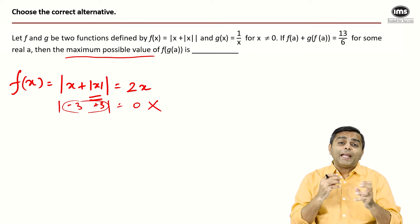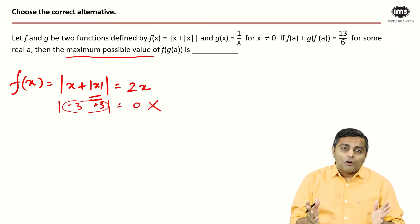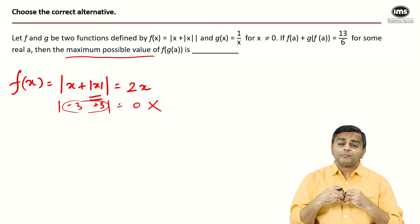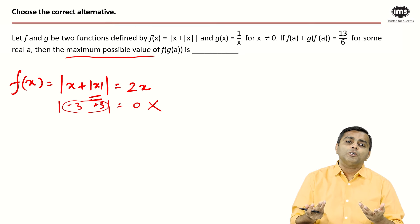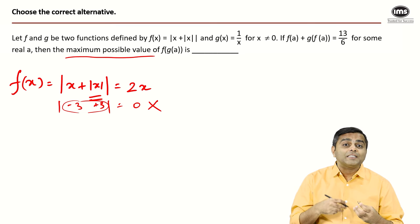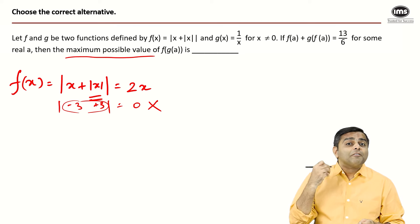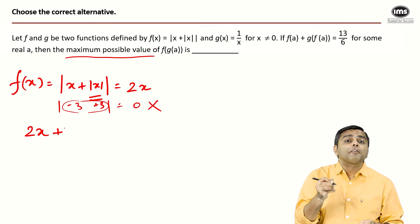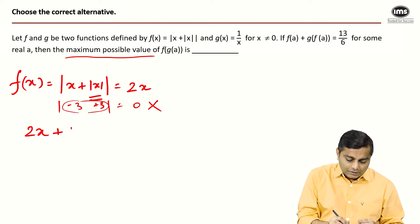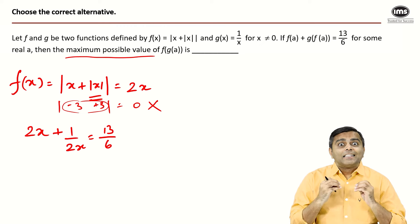Since x must be positive, f(x) = 2x and g(x) = 1/x. So g(f(a)) = 1/(2a). What they've given is effectively f(a) + g(f(a)) = 2a + 1/(2a) = 13/6.